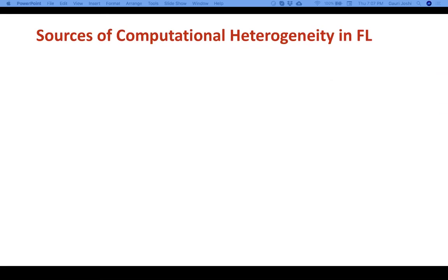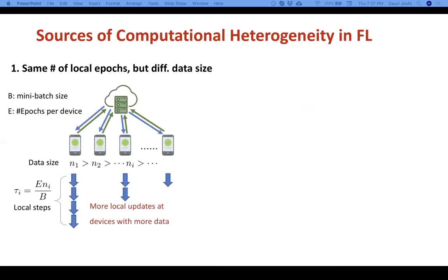So where does this computational heterogeneity come from? Here are some sources. First, in many practical implementations, the number of local epochs is fixed across all clients. So if we fix the number of local epochs, clients with larger data sets will end up performing more local updates. If we denote the number of local updates at the i-th client by tau i, then it's proportional to ni, which is the size of that client's local data set.